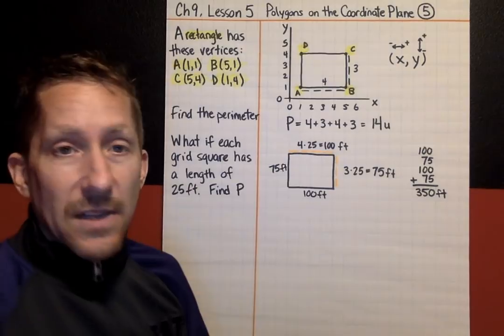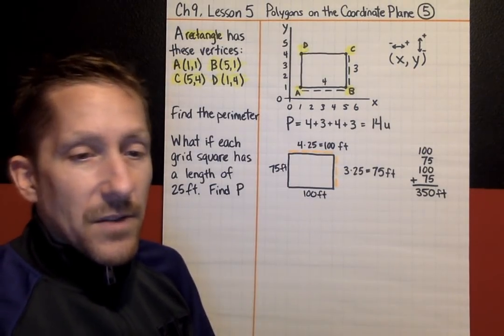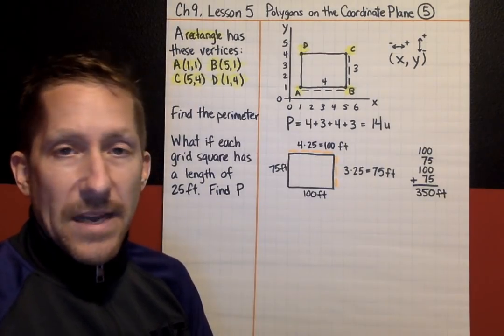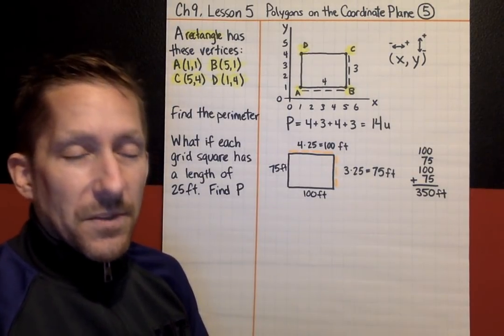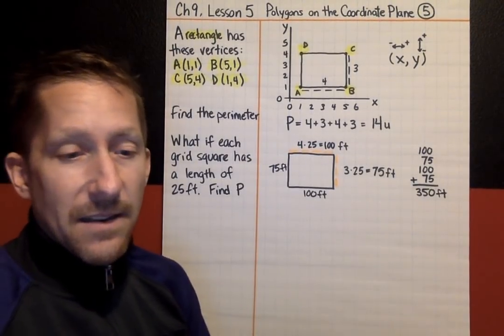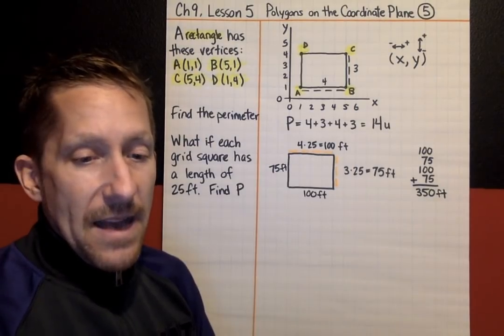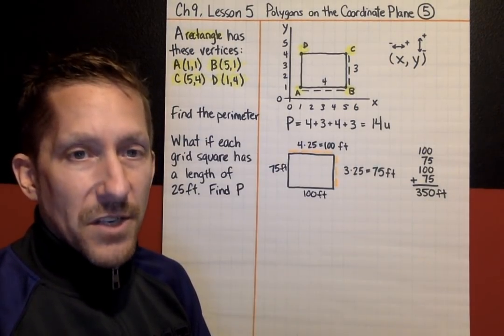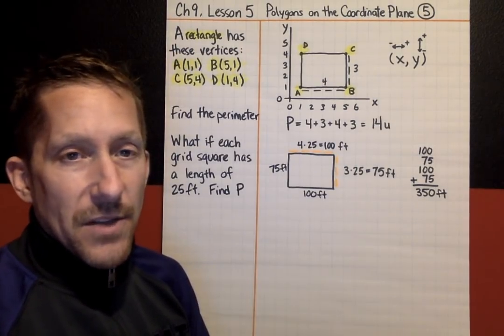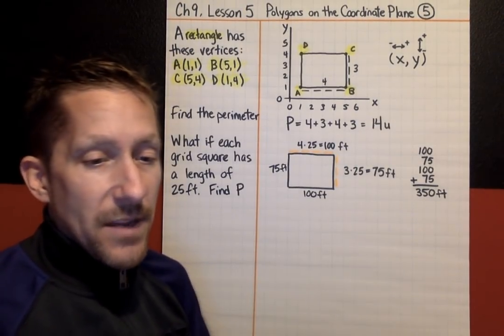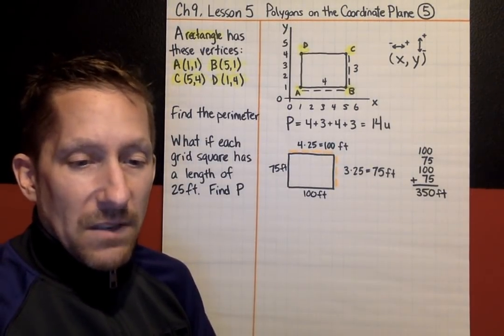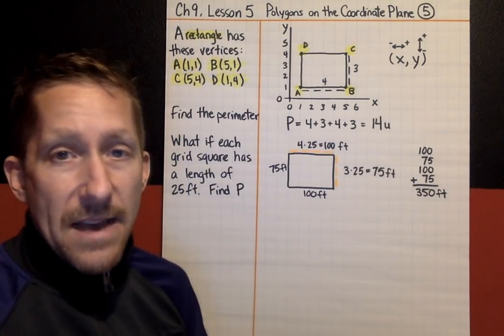Alright. Before the next example, the hidden treasure for today. The hidden treasure is being able to explain a few terms. Coordinate plane, which we've dealt with today and we'll do another one in just a second. So, coordinate plane, x-axis, y-axis, and the origin. On the next example, I will show you that, but that will be the hidden treasure. Being able to explain what's a coordinate plane, what's it look like, what's the x-axis, y-axis, and origin.